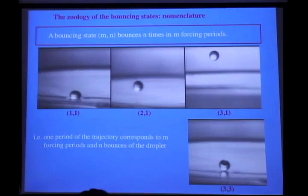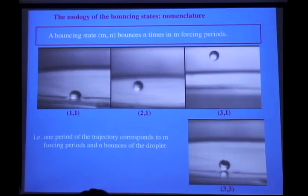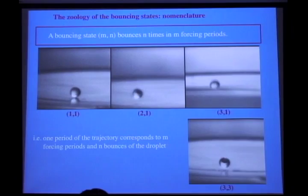And then we see this 3-3 mode here, which has three different bounces with three different amplitudes. The cycle of three jumps is completed after three periods of the forcing. So its periodicity is based on three forcing periods.